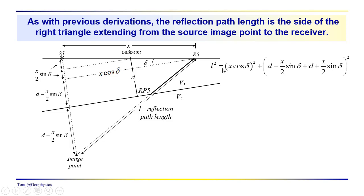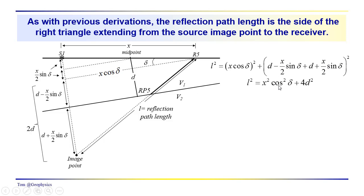We're solving for the length of this side of the triangle. L squared is equal to x cosine delta, the quantity squared. This is more detail than needed — you could have eliminated this step — but it shows that this side of the triangle is indeed d minus x over 2 sine delta plus d plus x over 2 sine of delta. The x over 2 sine delta terms cancel out, giving the starting point: L squared equals x squared cosine squared delta plus 4d squared.